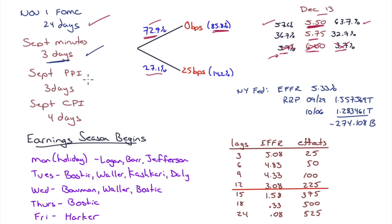September PPI is in three days and September CPI in four days — though the calendar I looked at may have these reversed, since Monday is a holiday pushing CPI to Thursday. CPI is not the Fed's preferred number, but PCE usually moves in lockstep with it. We want to pay attention to the core, since energy prices could push the headline higher — food and energy are typically stripped out.